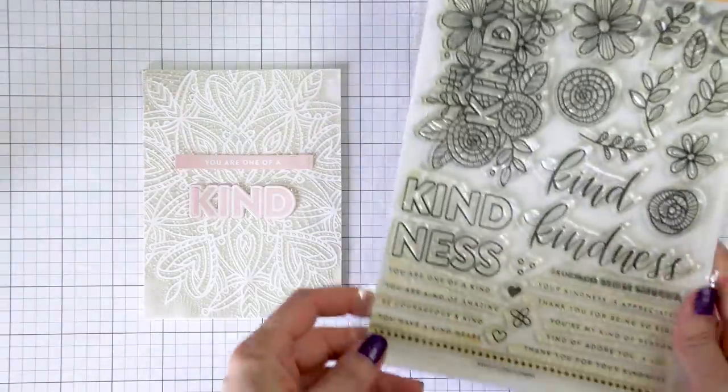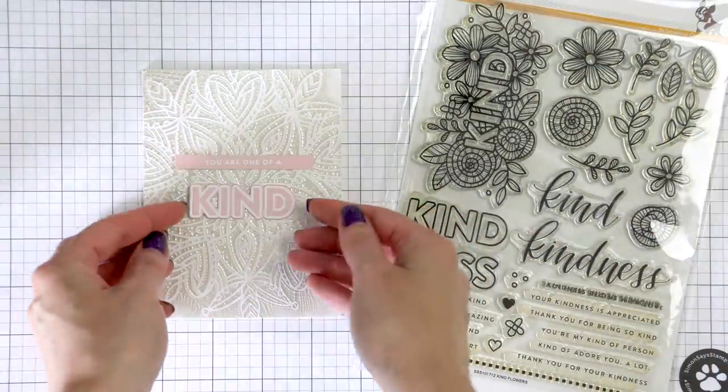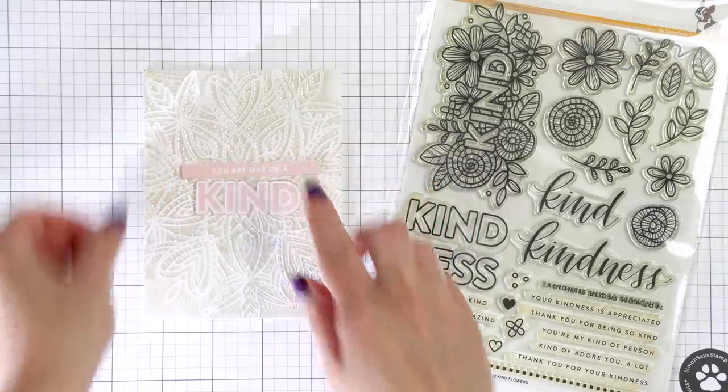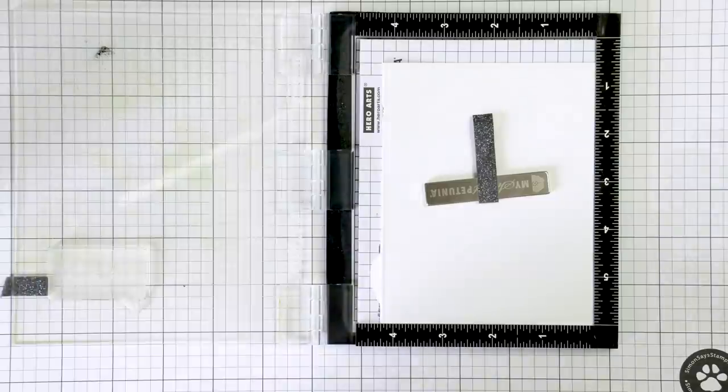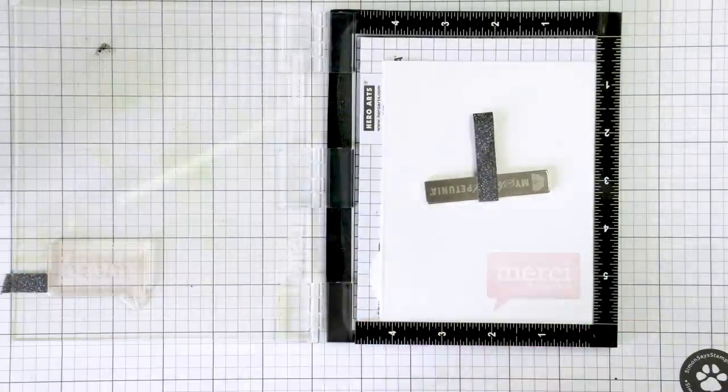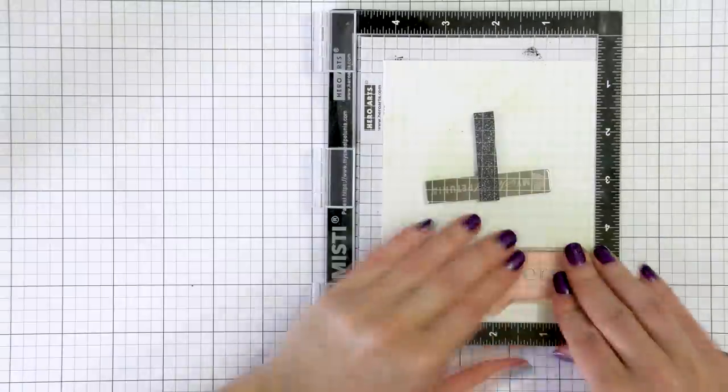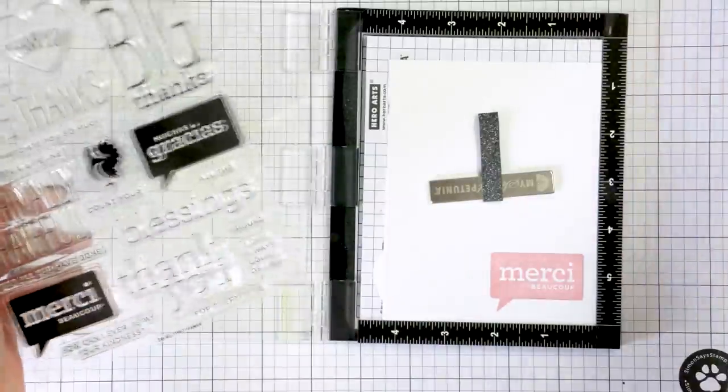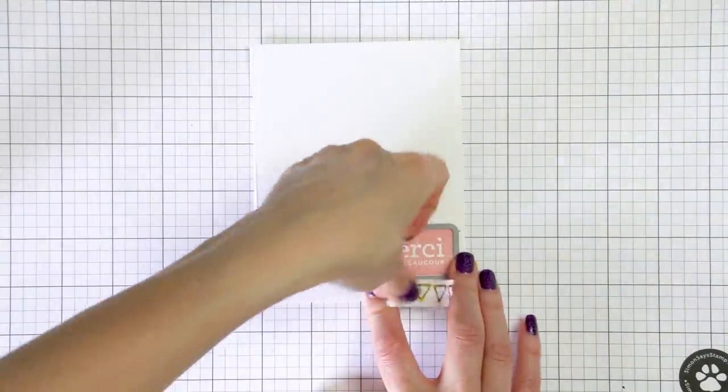For my next card I heat embossed a sentiment that reads your one of a kind and I used Simon says stamp kind flowers stamp set and again the same peony cardstock from Hero Arts. For my next card I stamped Merci in twirling tutu ink from Kathy Zilsky all the thanks stamp set and cut it out using a coordinating die and this reads thank you very much in French.